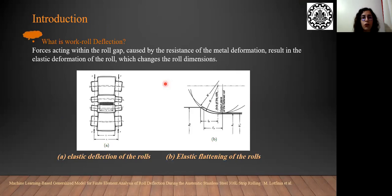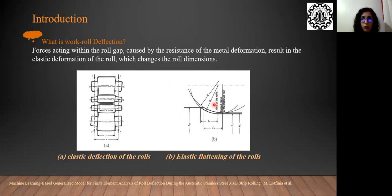What is work-roll deflection? Forces acting within the roll gap, which are caused by the resistance of the metal to deformation, result in the elastic deformation of the roll, which you can see in this figure. This changes the roll dimensions from the rigid form to the elastically deformed form, which you can see in this figure.